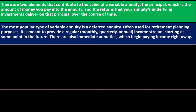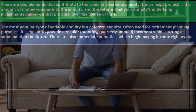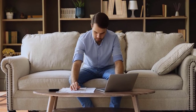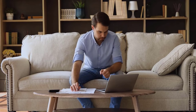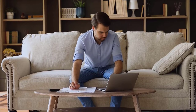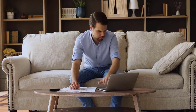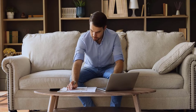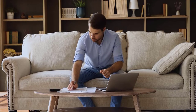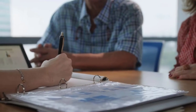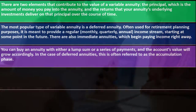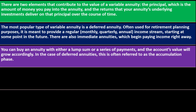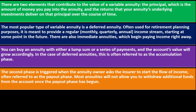There are also immediate annuities, which begin paying income right away. Usually it's ideal to put money into an annuity in advance before it starts paying out. However, you could put a lump sum into an immediate annuity and start receiving payments immediately, hoping to stretch a retirement nest egg. You can buy an annuity with either a lump sum or a series of payments, and the account's value will grow accordingly — in the case of deferred annuities, this is called the accumulation phase.